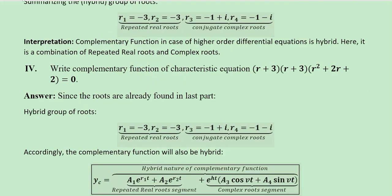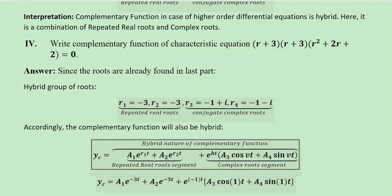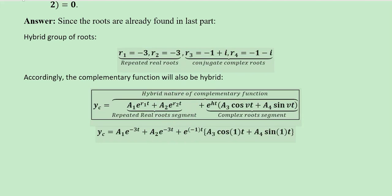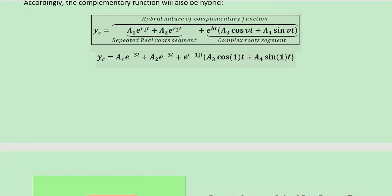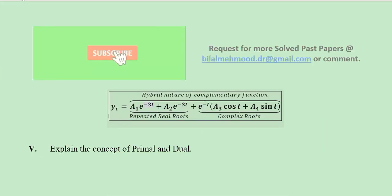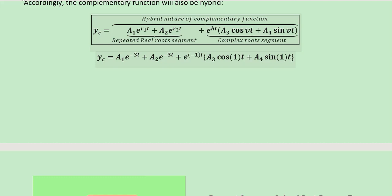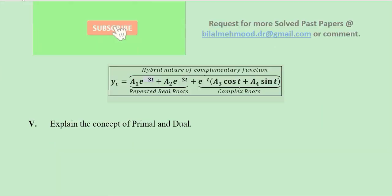The fourth question is about writing the complementary function from the characteristic equation. We have already found the roots in the last part and these will be used to develop the complementary function. Here we have written the formula, the two parts are mentioned, and then we have substituted the values. There is a small typographic mistake — it should be a single minus sign because r2 is minus 3 and r1 is minus 3. So the final result should also be with minus 3, and this will be the correct complementary function.